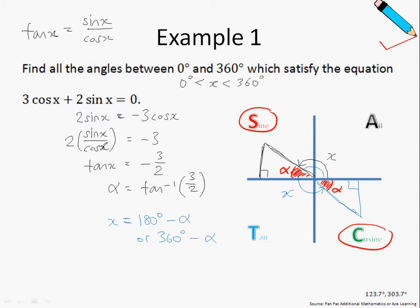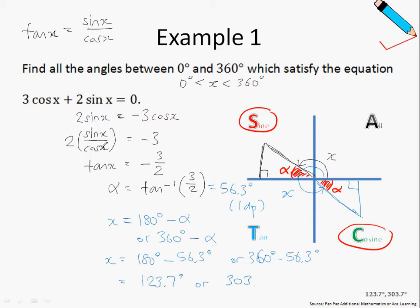Keying this into the calculator, alpha equals 56.3 degrees to one decimal place. So x equals 180 degrees minus 56.3, or 360 degrees minus 56.3 degrees. Simplifying and rounding off, we get 123.7 degrees or 303.7 degrees to one decimal place.